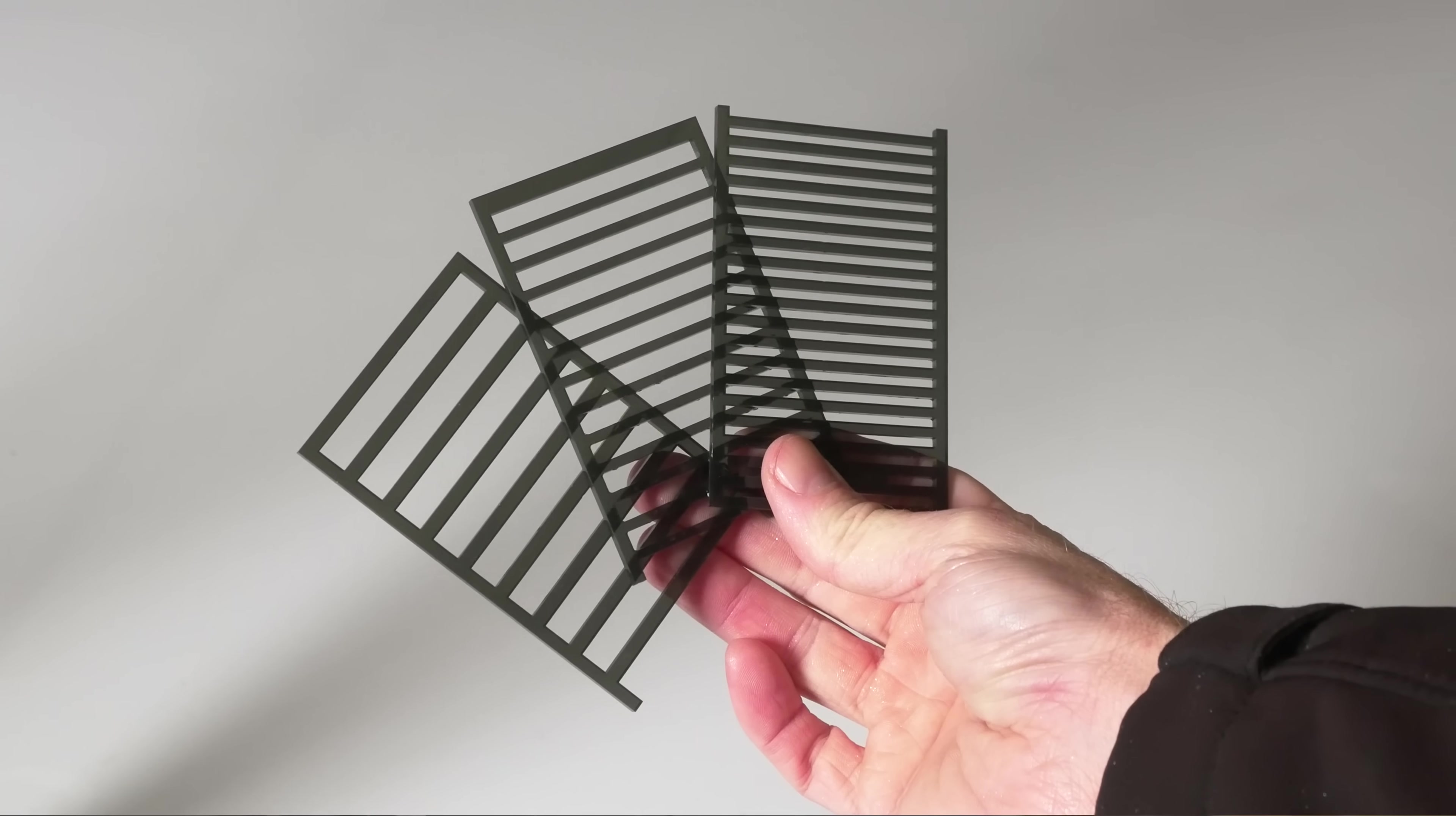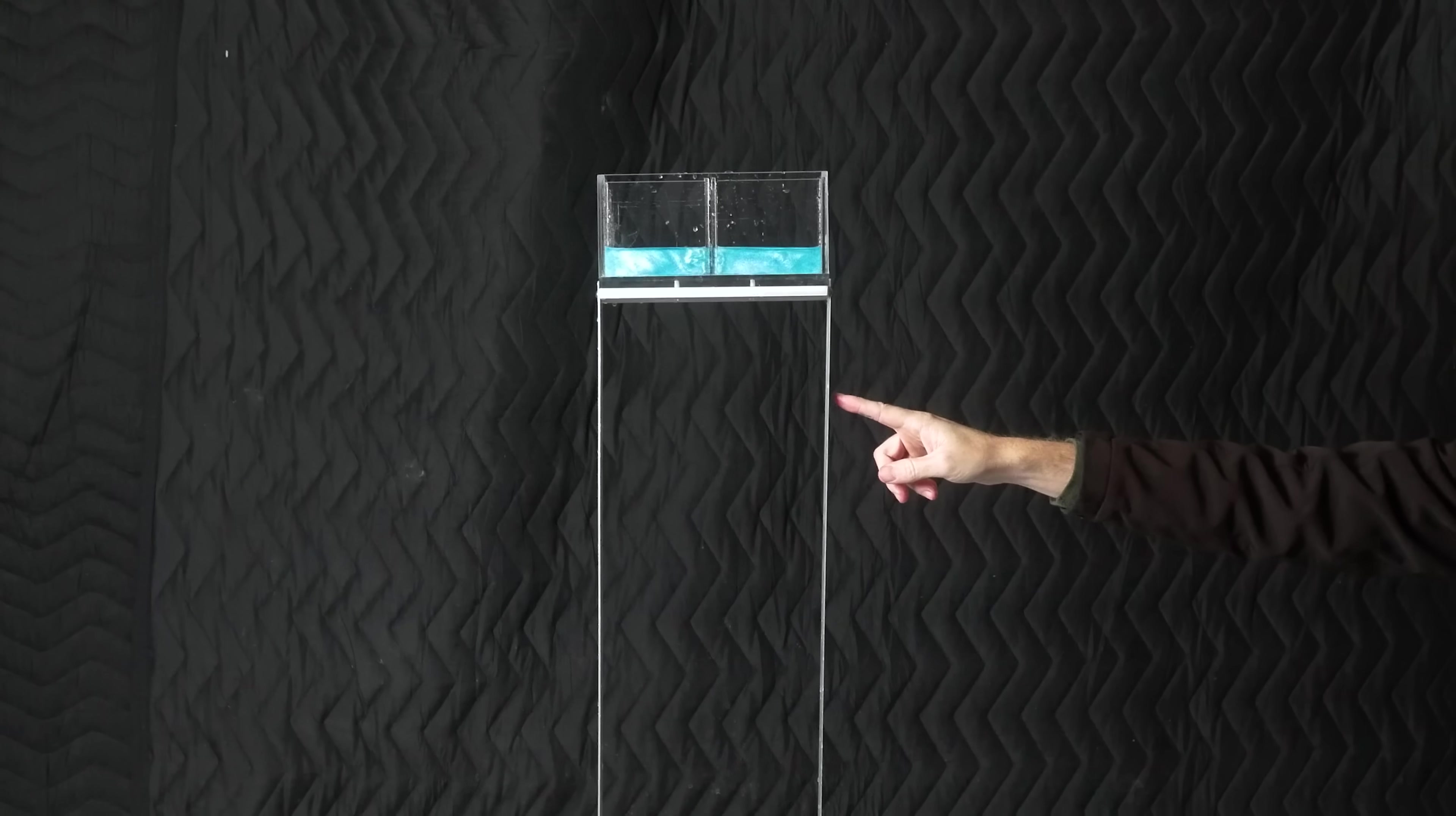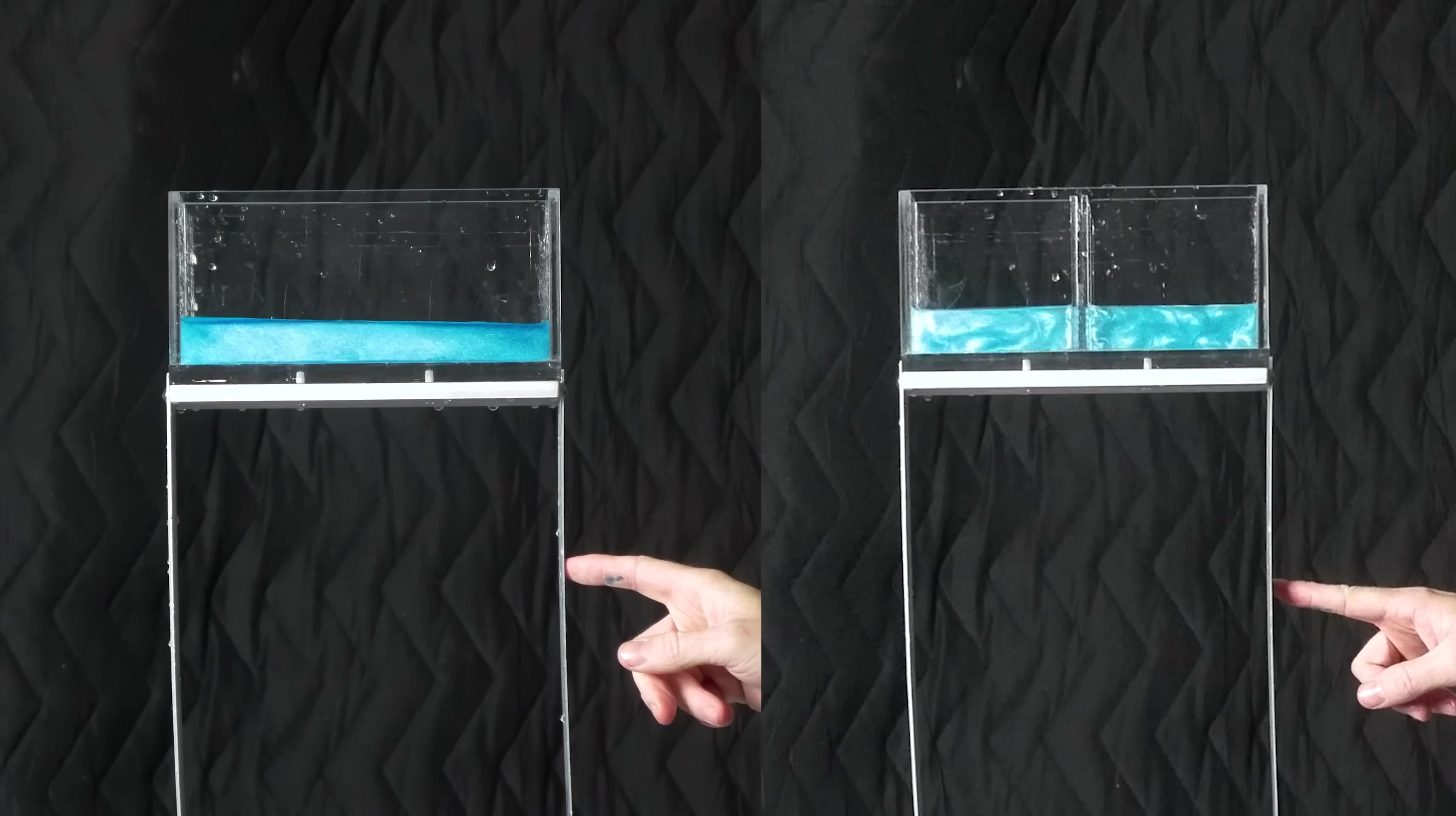So instead of relying on breaking waves, most sloshing dampers use flow obstructions like screens, columns, or baffles. I got a few different options cut out of acrylic so we can try this out. These baffles add drag, increasing the energy dissipation with the water, usually without changing the sloshing frequency. Here's a side-by-side comparison of the performance without a baffle and with one.